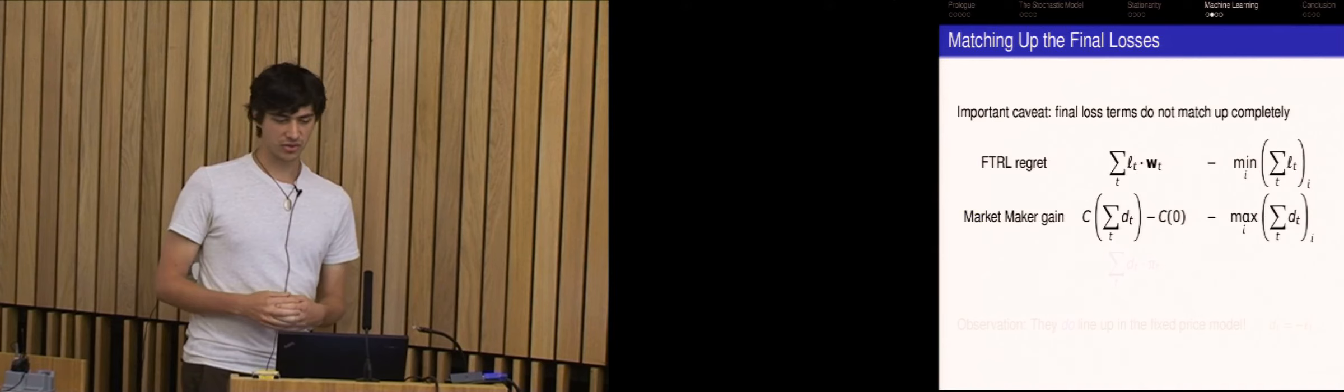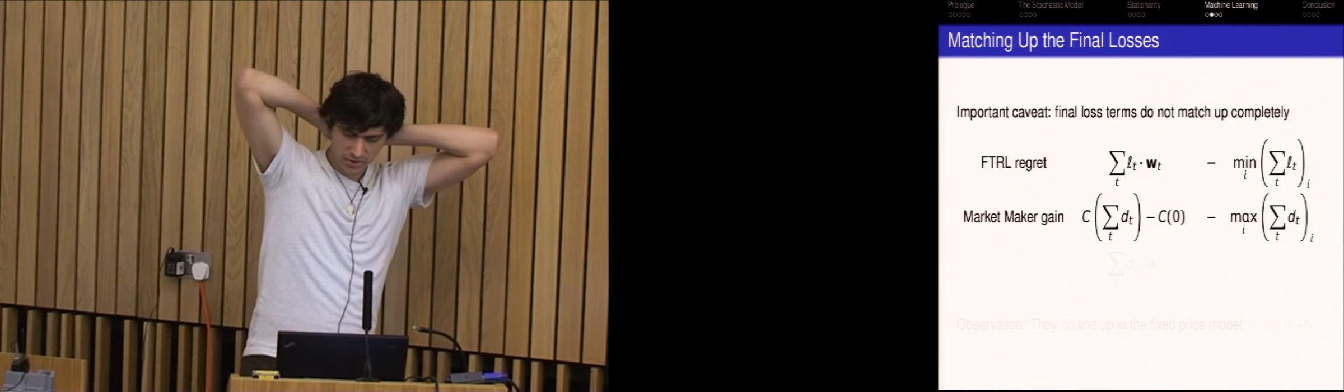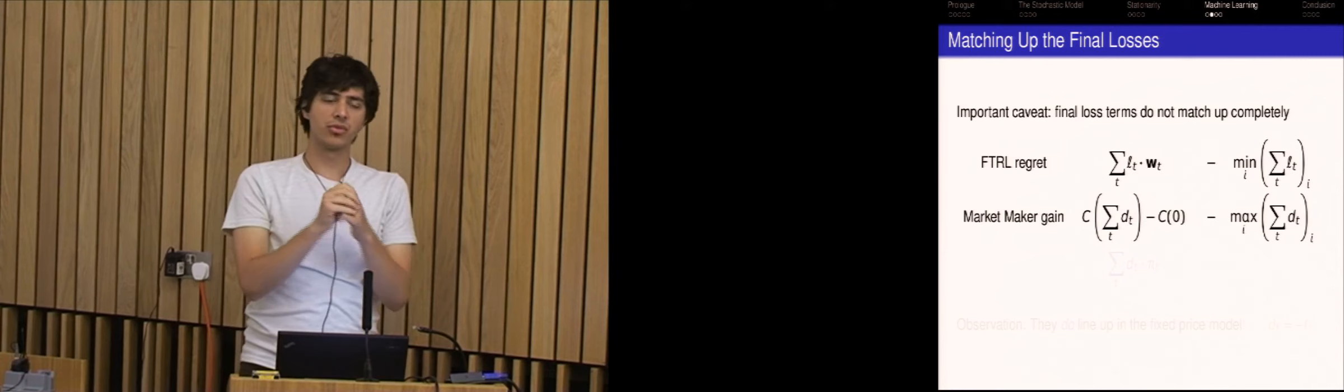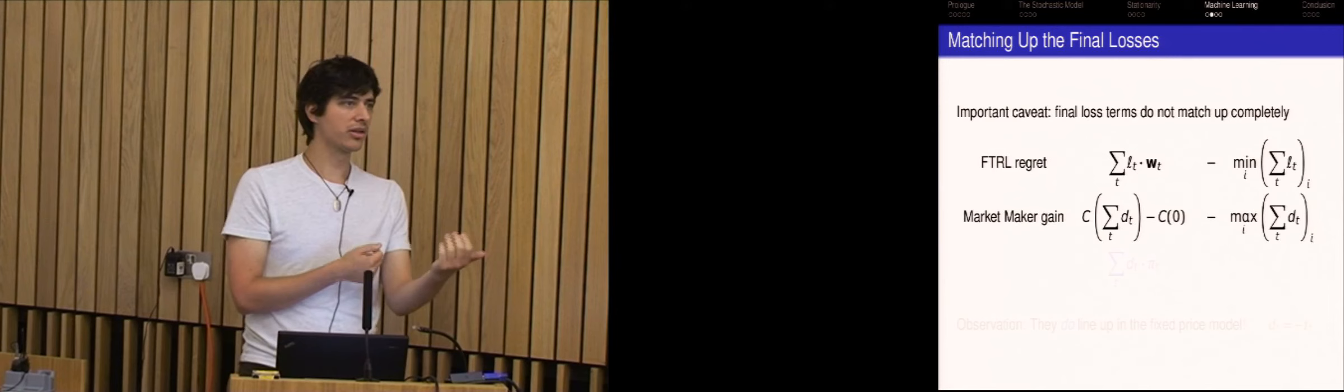And then the goal is to minimize the regret, which is this term, which is just the performance that you had, the loss that you suffered during the process, which is the first term. And then the second term is the best expert in some sense. So the loss of the best experts. So the difference between these two is your regret. And Chen and Vaughn showed that in fact, the market maker update is exactly the same as this update. So the updates are the same.